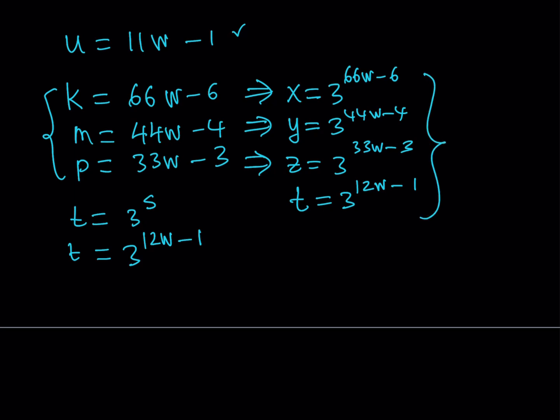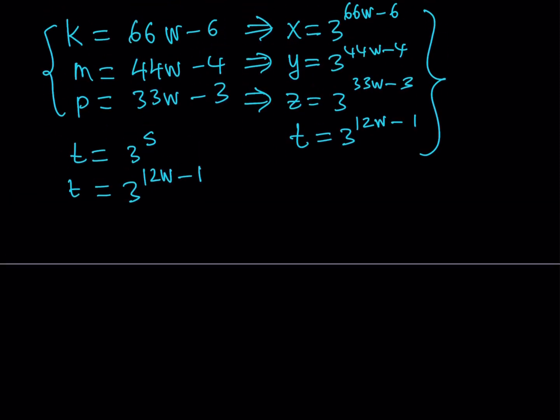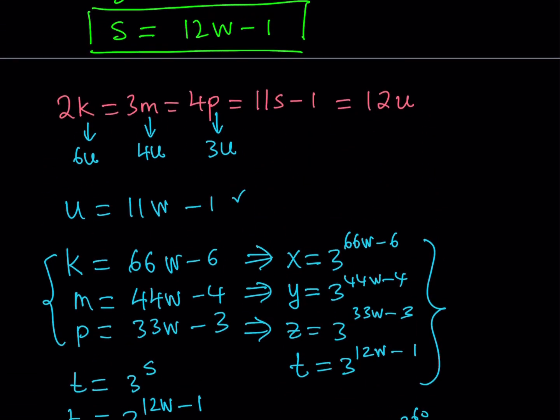So, this basically gives us the solution as ordered quadruples, and by changing the values of w, basically using positive integer values, you can get infinitely many solutions to this equation. For example, if w is equal to 1, then you're going to be getting x is equal to 3 to the power 60, y is equal to 3 to the power 40, z is equal to 3 to the power 30, and t is equal to 3 to the power 11. And obviously, you can find much more, but basically, this proves that there are infinitely many solutions to this equation in natural numbers.